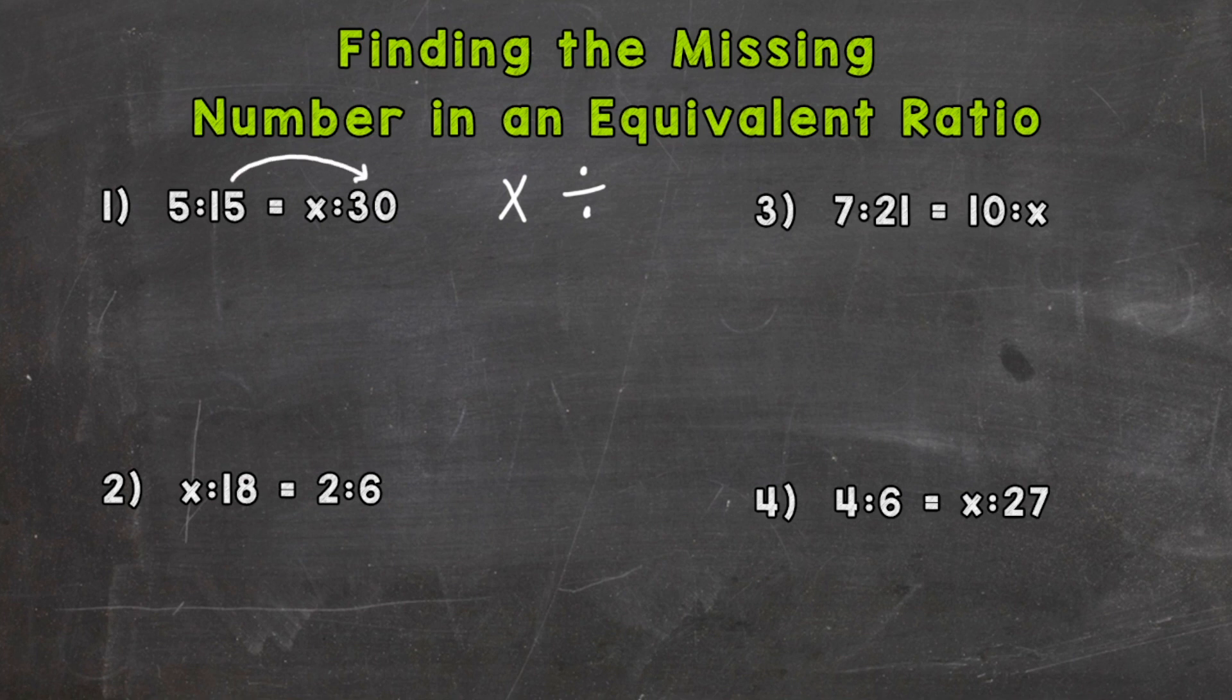How do we get 15 to equal 30? We can multiply 15 by 2. When it comes to equivalent ratios, if you multiply or divide both numbers of the ratio by the same thing, you get an equivalent ratio. So if we multiply that 15 by 2 and then multiply that 5 by 2, we get an equivalent ratio. 5 times 2 gives us 10, so x equals 10.